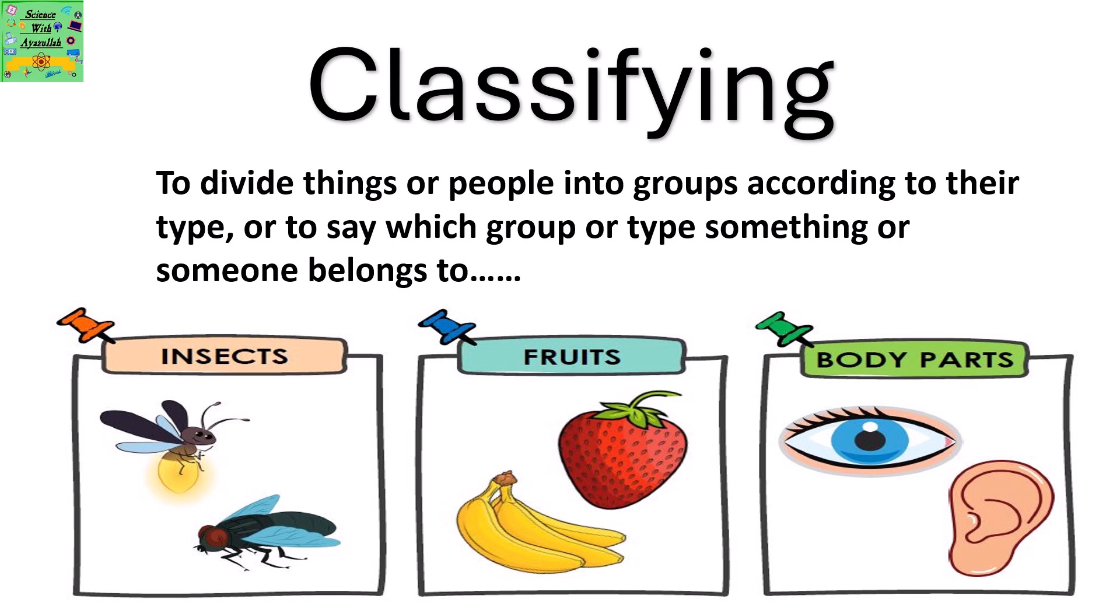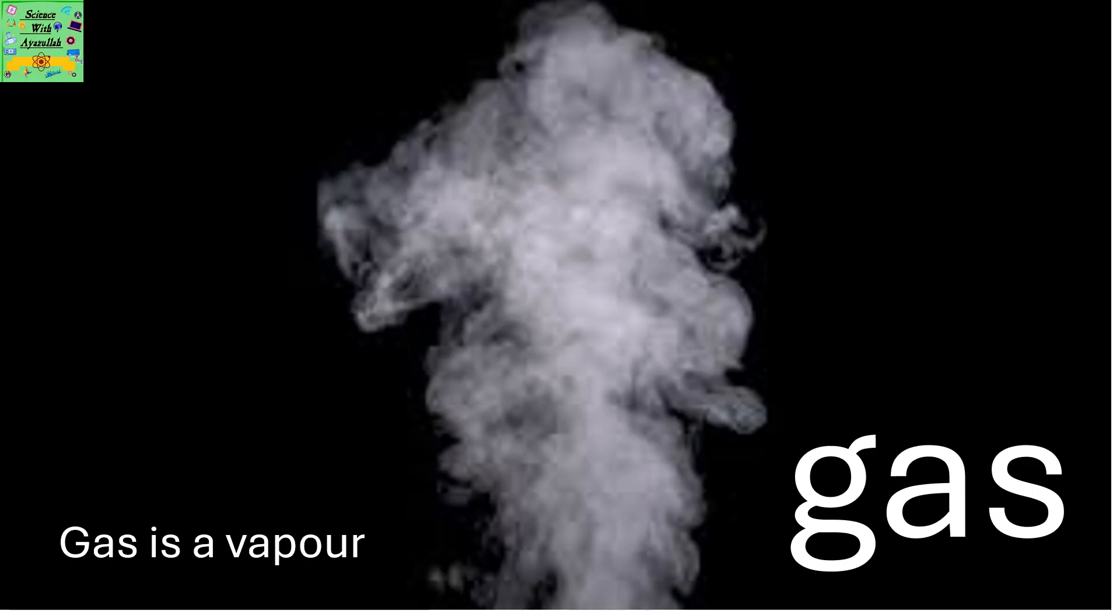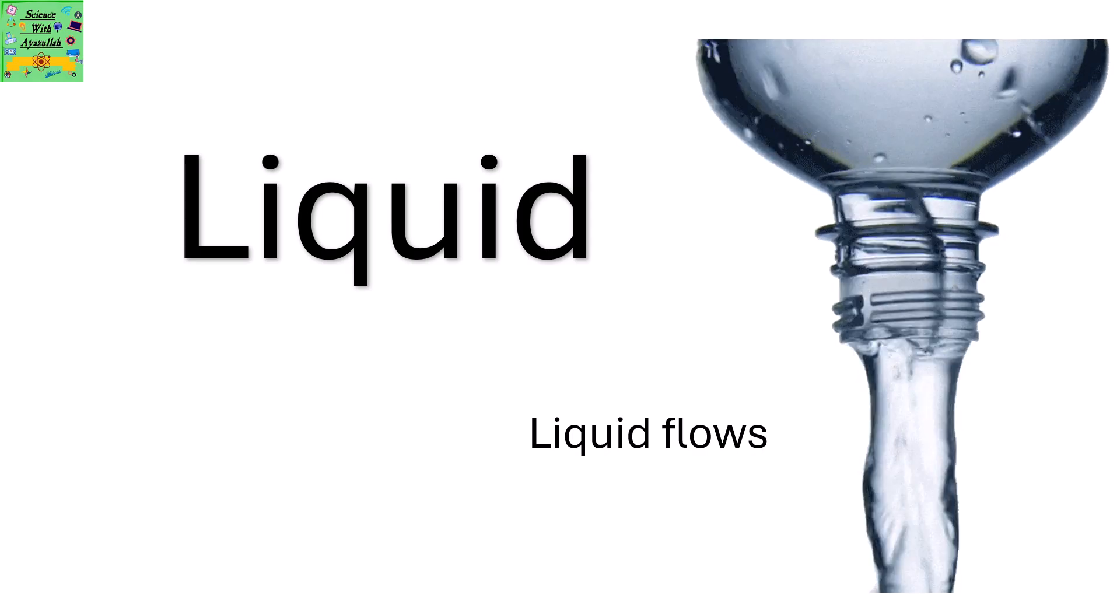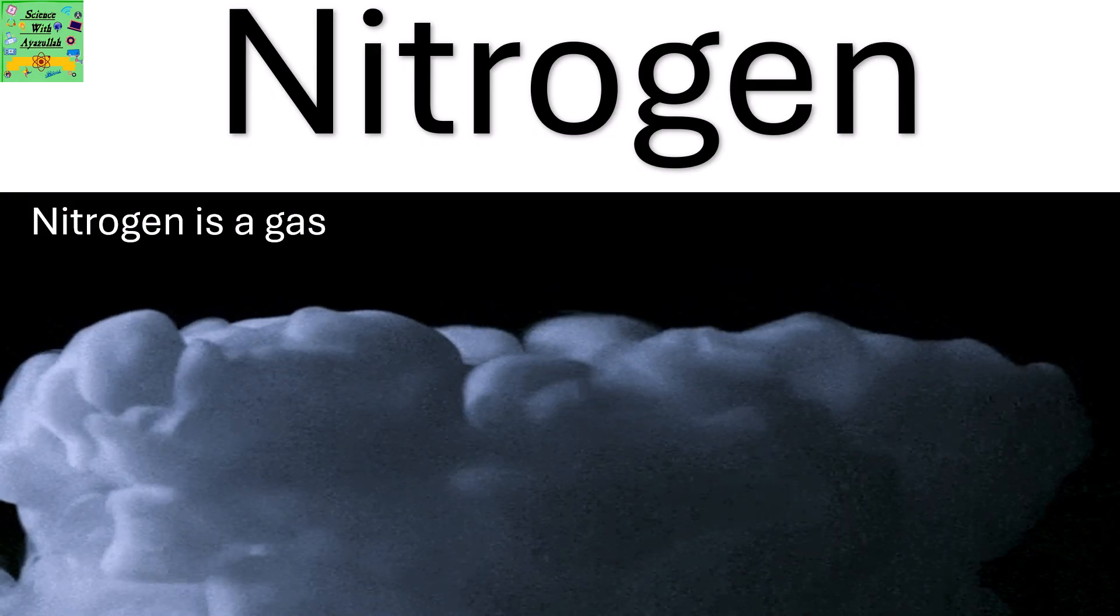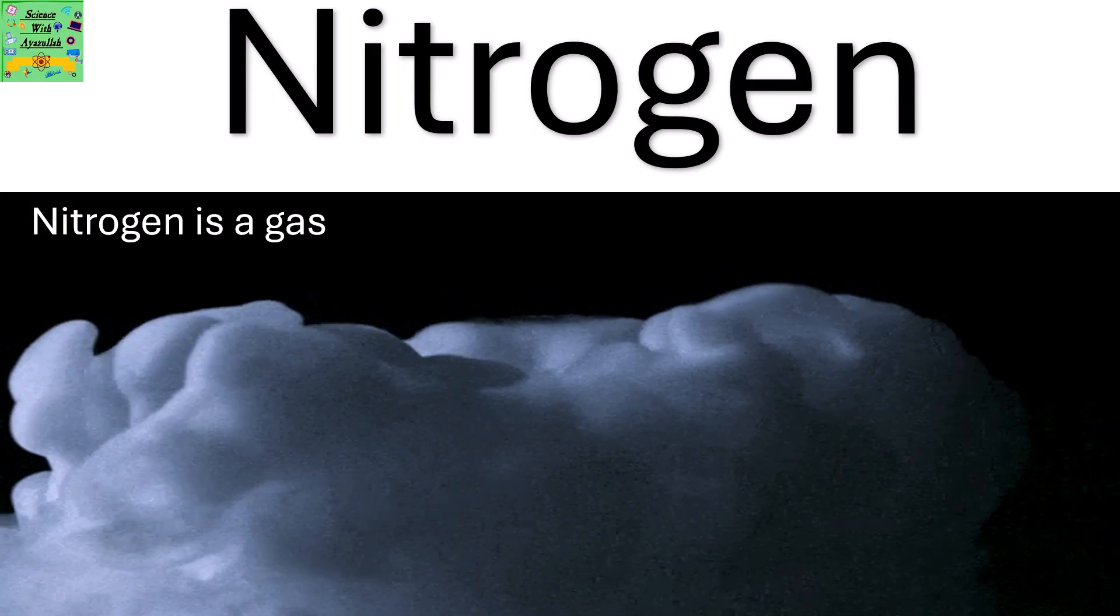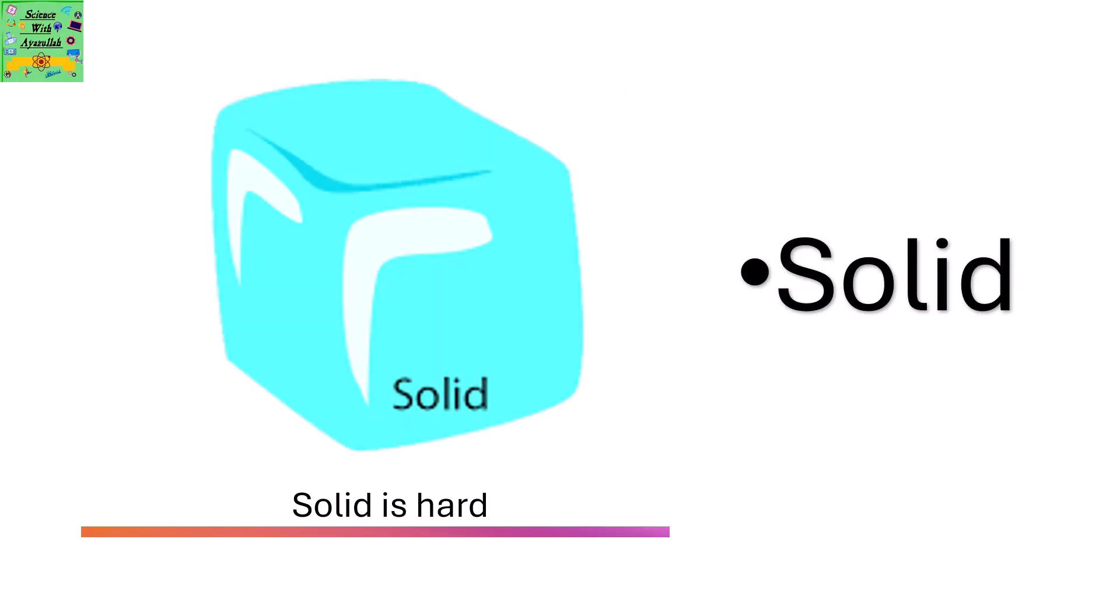Like insects, fruits, body parts, etc. Gas: It's a vapor. Liquid: Liquid flows. Nitrogen: Nitrogen is a type of gas. Solid: Solid refers to something that is very hard.